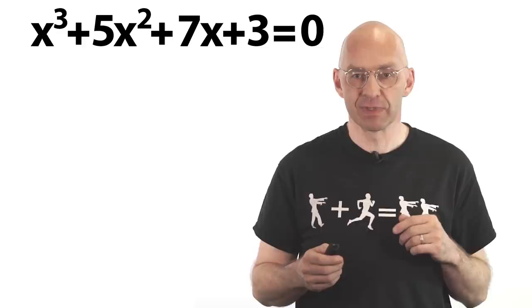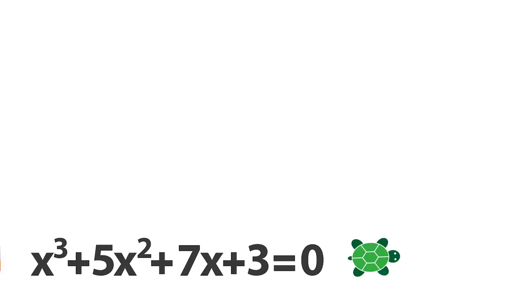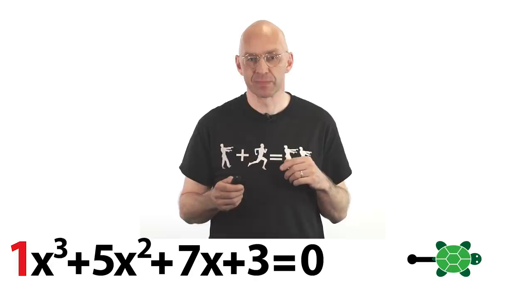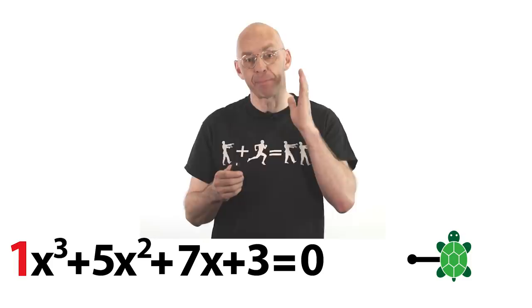Okay, here's an equation, here's our pet turtle and here's my laser tag gun. Here's the turtle at a starting point facing to the right. The leading coefficient of our polynomial is 1. This tells the turtle to walk one unit to the right.